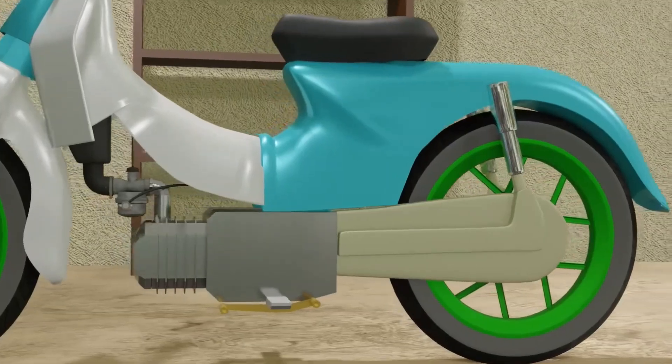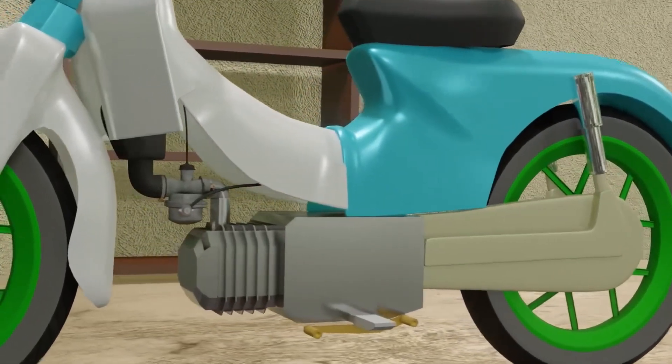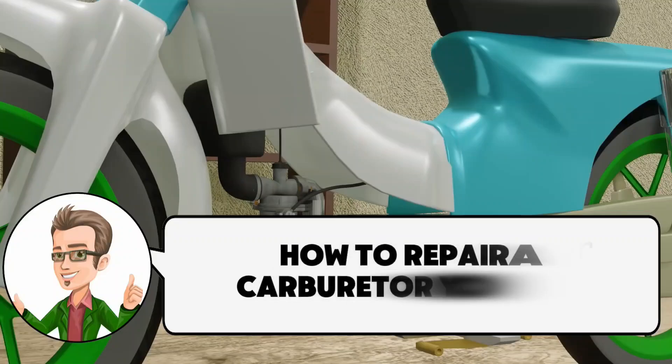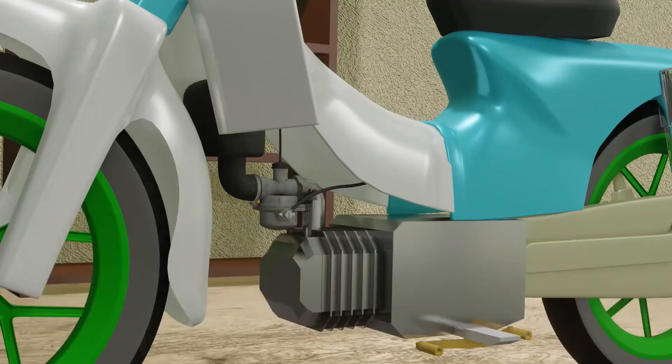If you encounter a condition where the motorbike is stuttering or lacking power, it could be because the carburetor is dirty. Therefore watch this video until the end to find out how to disassemble it, what to clean and how to adjust it.